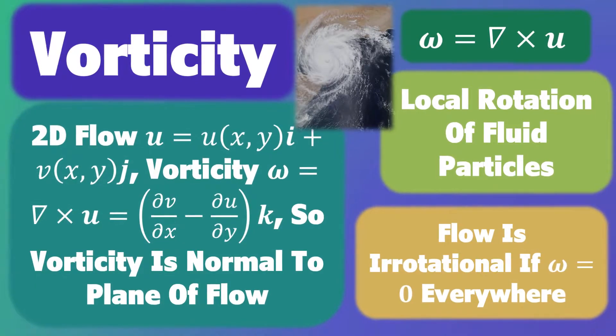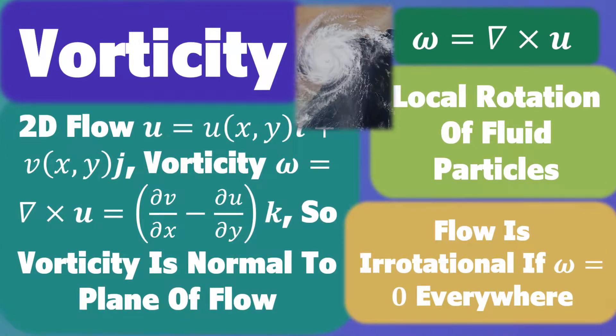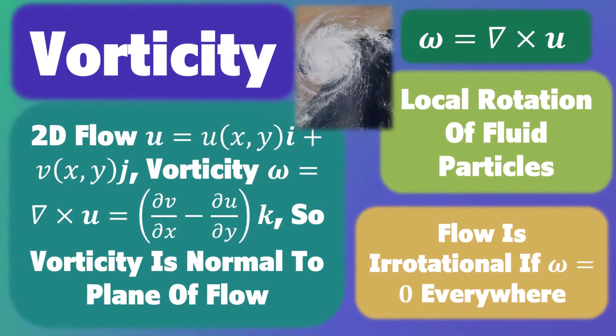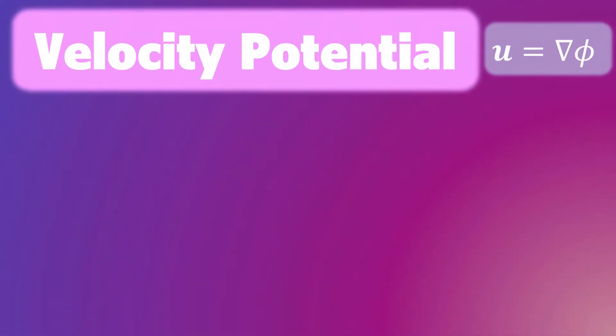We say a flow is Irrotational if the vorticity is zero everywhere in the flow. For an Irrotational flow,